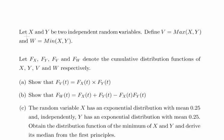Let X and Y be two independent random variables. Define V as the pairwise maximum of X and Y, and W as the pairwise minimum of X and Y. F of X, F of Y, F of V, and F of W denote the cumulative distribution functions of X, Y, V the maximum, and W the minimum respectively.